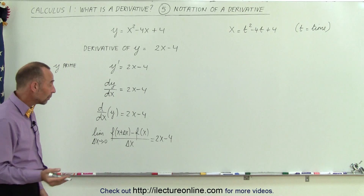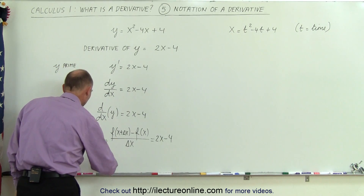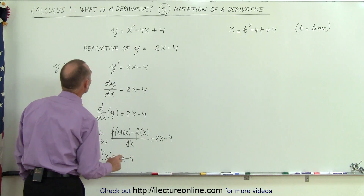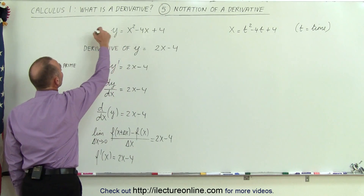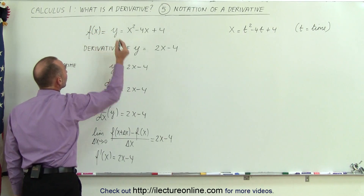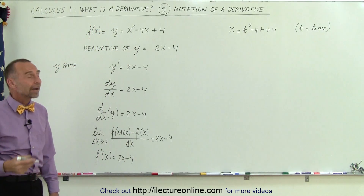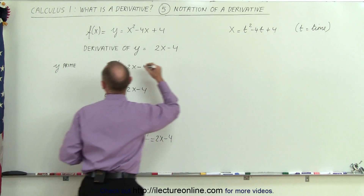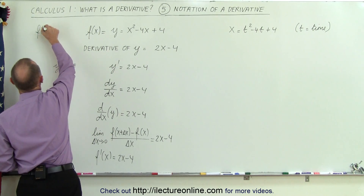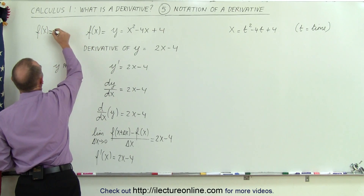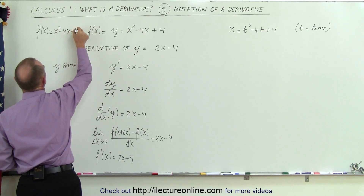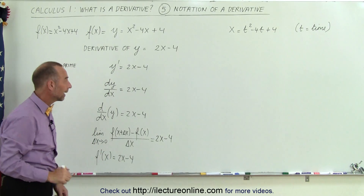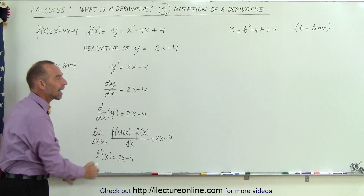Finally, we can also write it as f prime of x, which is equal to 2x minus 4. Remember, the function can also be written as f of x equals y equals x squared minus 4x plus 4. So if we write the function as f of x equals x squared minus 4x plus 4, then the derivative of that function, f prime, is equal to 2x minus 4.